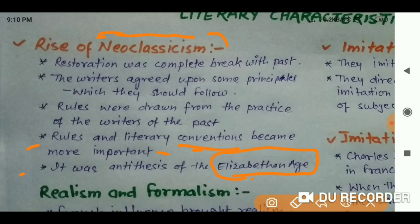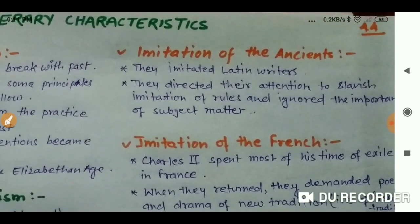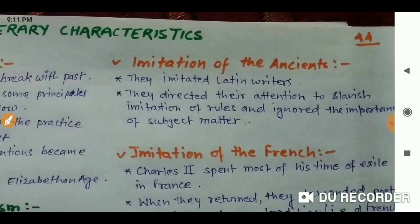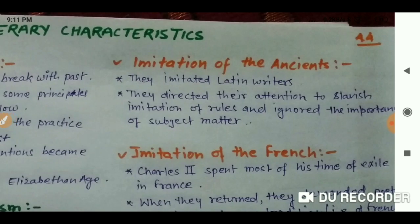The next characteristic is imitation of ancients. They imitated Latin writers, and we must know that they imitated mostly Latin writers and French works. They directed their attention to slavish imitations of rules and ignored the importance of subject matter, which was important in the Elizabethan Age.